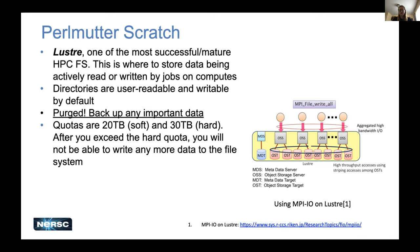Purging means that if files aren't accessed within a certain time, they're automatically removed by our system — it's not something we do manually, it happens automatically. So anything important on Perlmutter Scratch that you want to keep needs to be backed up to another file system at NERSC or somewhere else. The directories on Perlmutter Scratch are user-level directories; each user has their own directory, and by default it's only user-readable with no group readability.